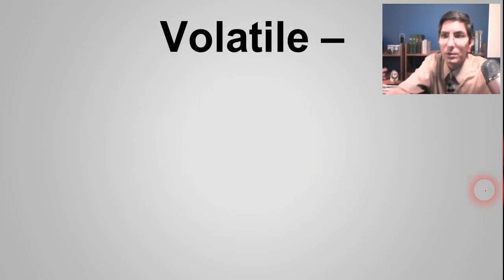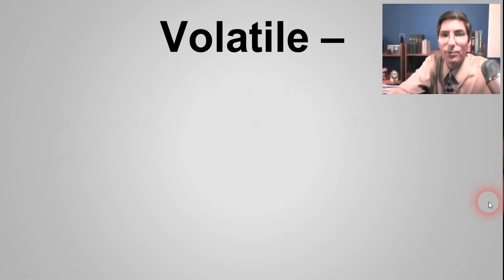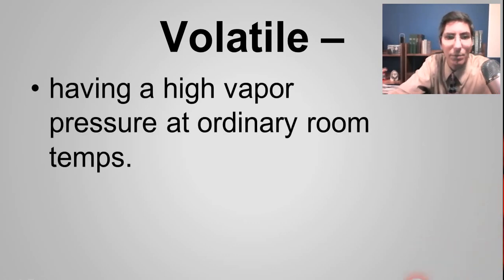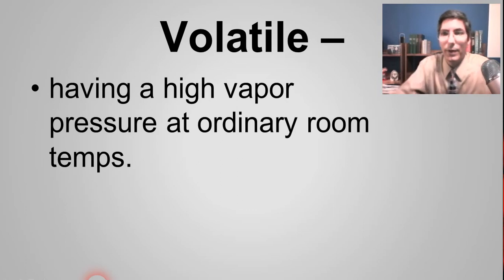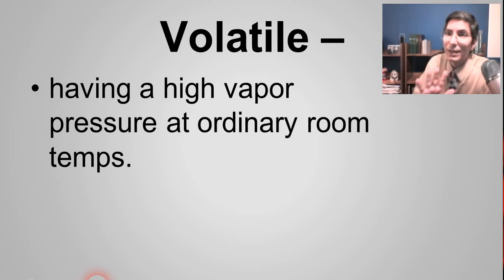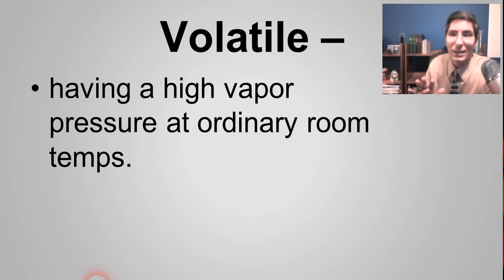Another word used in chemistry is 'volatile.' It means a substance has a high vapor pressure at ordinary room temperatures. Think about things that evaporate very easily — like acetone or nail polish remover on your skin. It evaporates very quickly and feels cold on your skin because evaporation is a cooling process. We say it has a high vapor pressure.